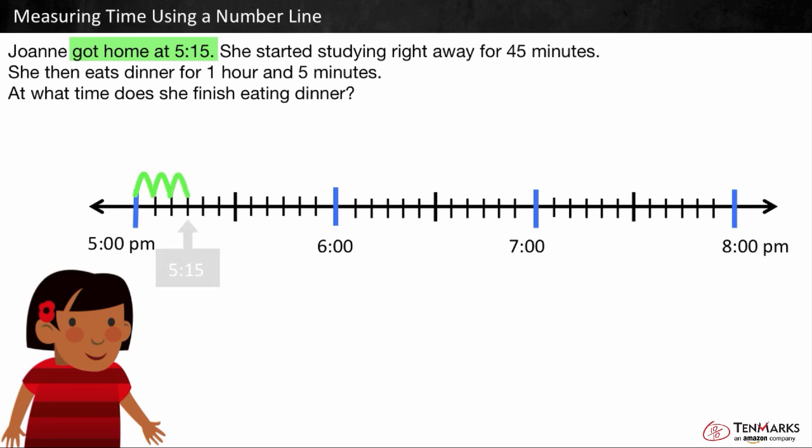At 5:15 Joanne got home. She starts studying right away for 45 minutes. So, we can add on 45 minutes starting at 5:15. Let's count by 5's from 5:15 to get to 45 minutes. Counting: 5, 10, 15, 20, 25, 30, 35, 40, 45. We landed at 6 o'clock.